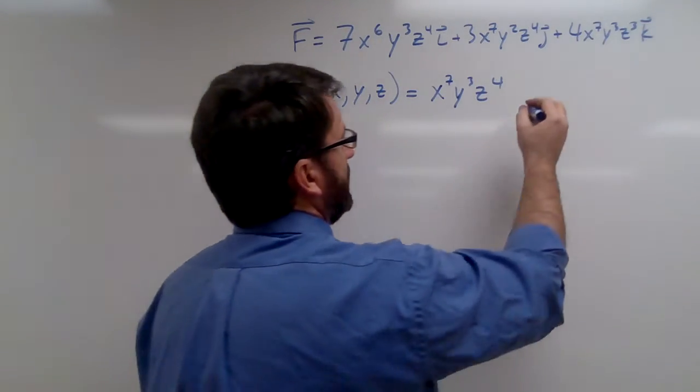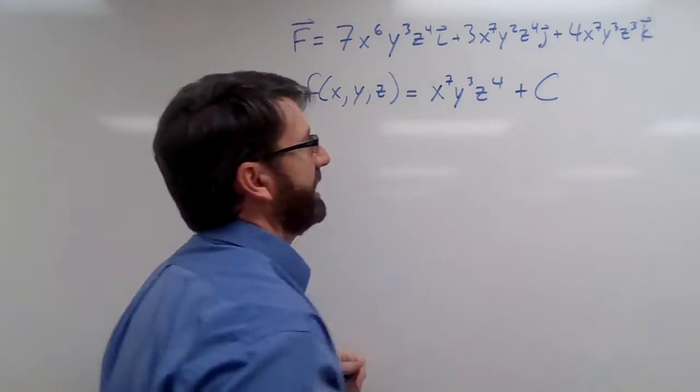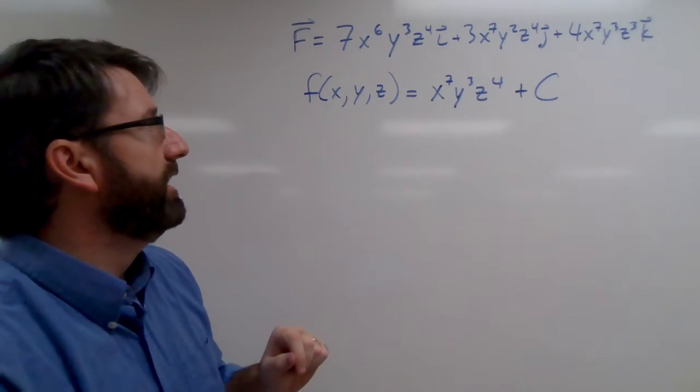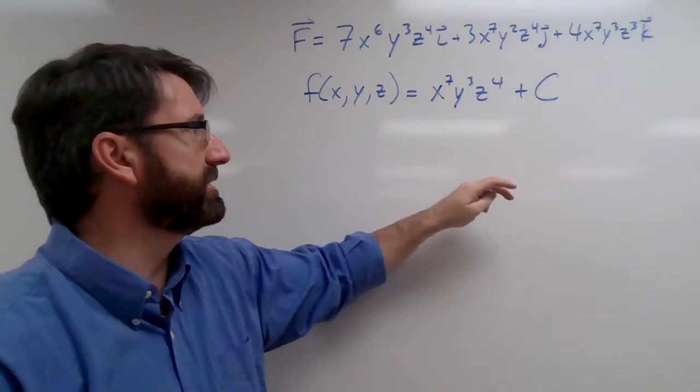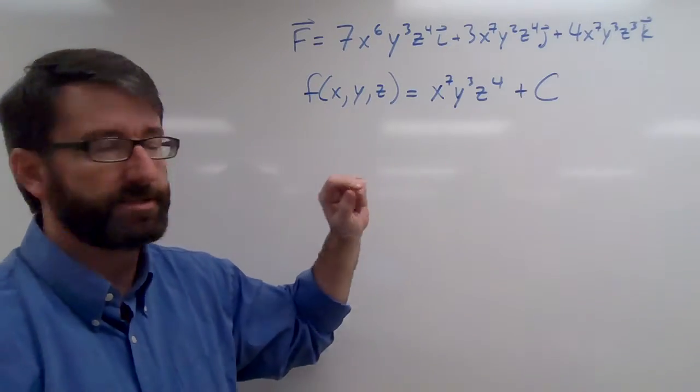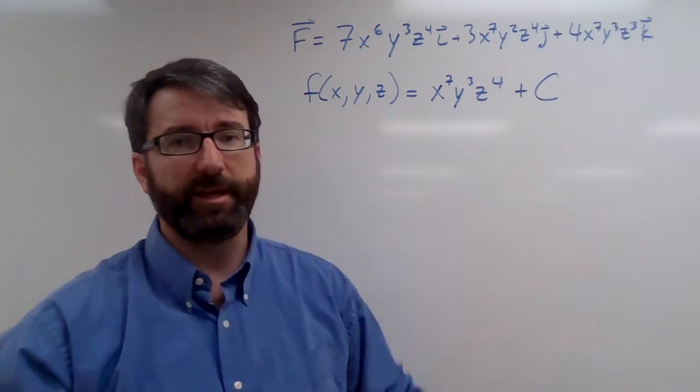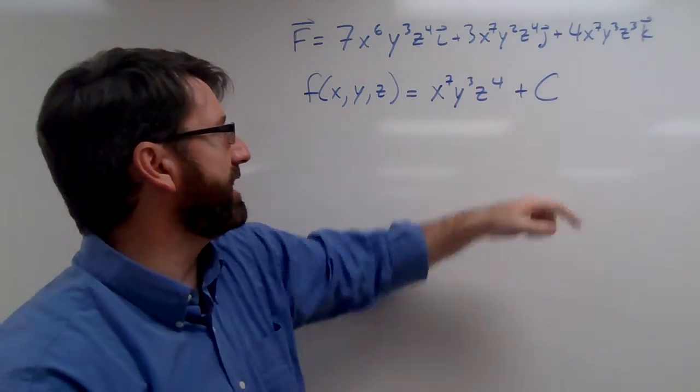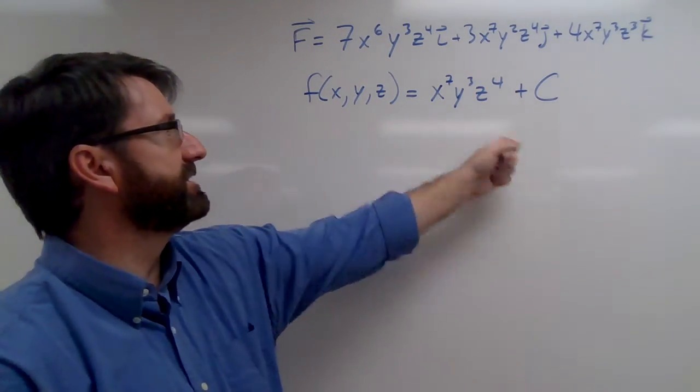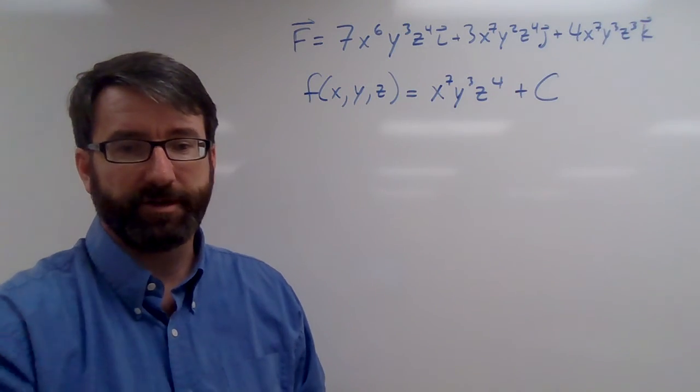Of course, we could always add a constant and still get the same thing. There's going to be an infinite number of potential functions with any constant added on to the end here. We have to add plus C, but this is going to be our potential function.